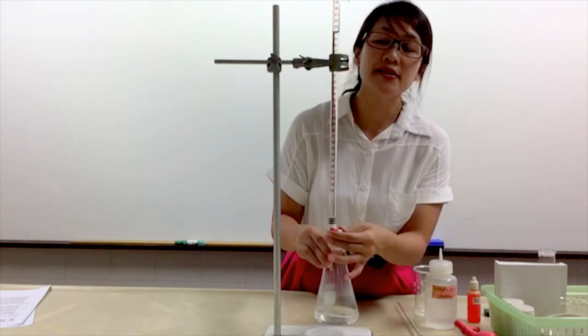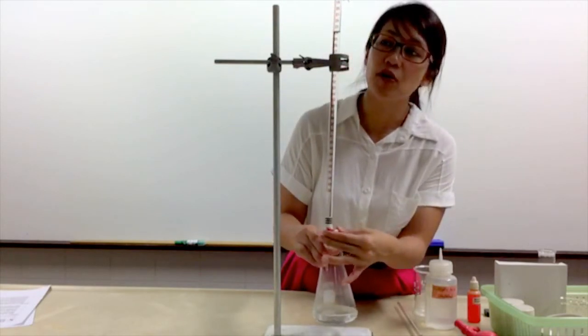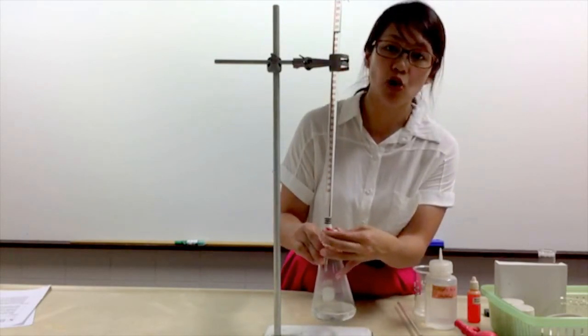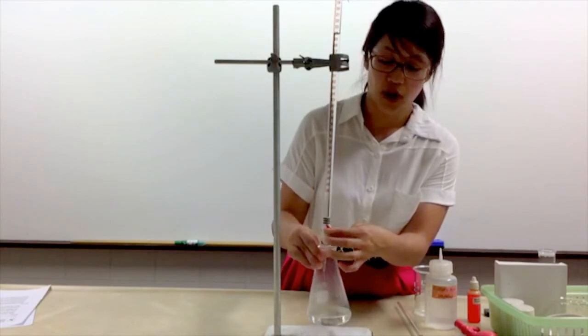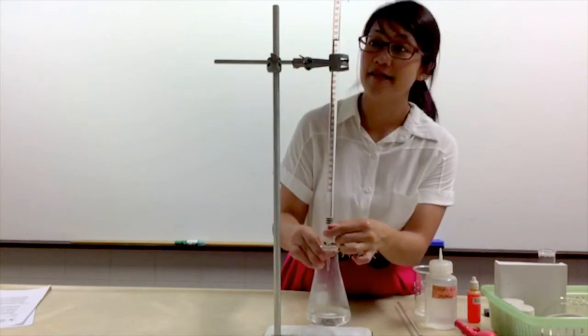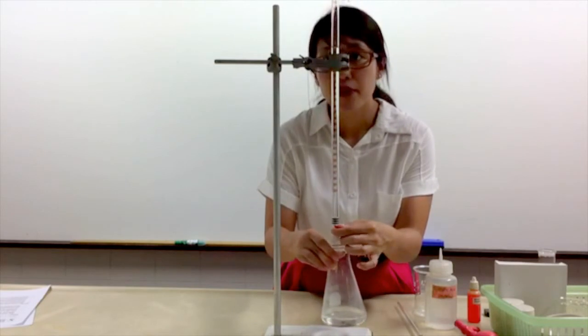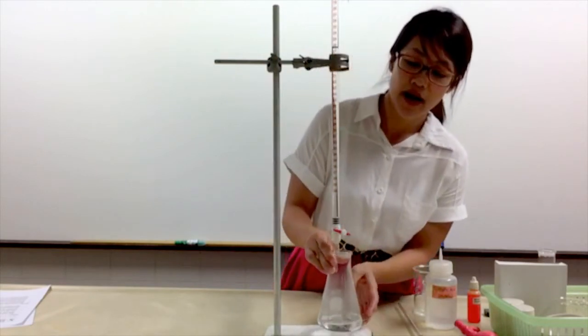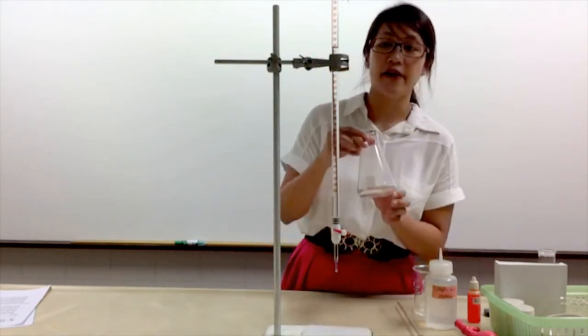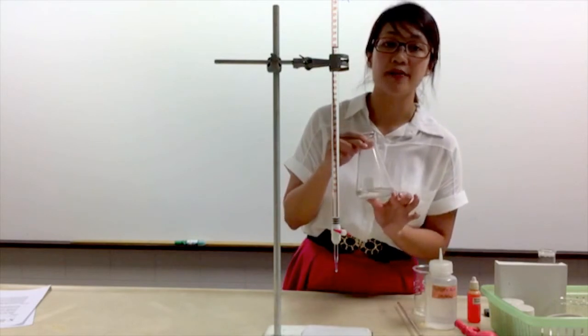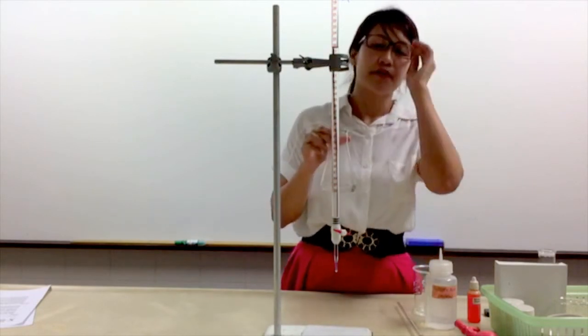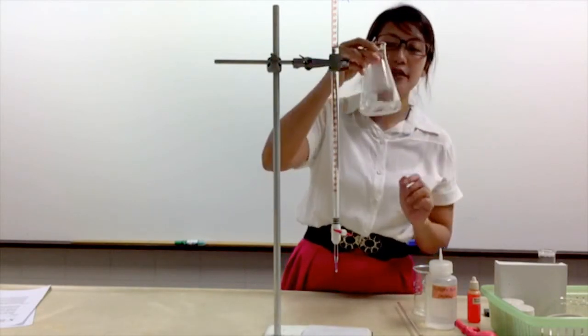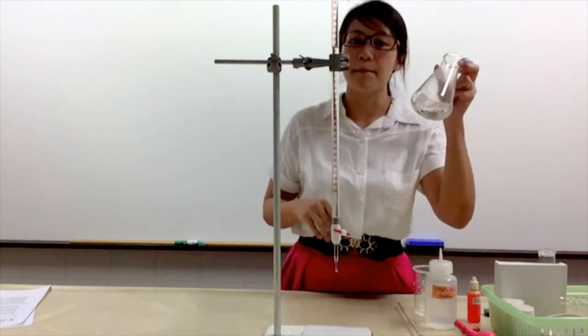Once it reaches about 25 cm³, you need to add your alkaline drop by drop so that you will not exceed the value that you need. I have added 26.2 cm³ of alkaline.